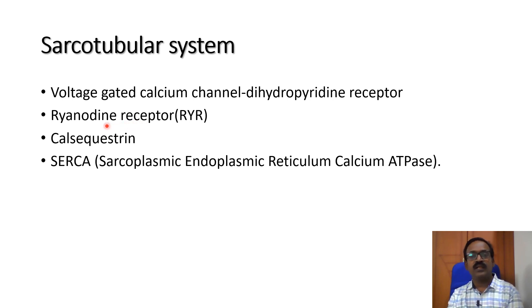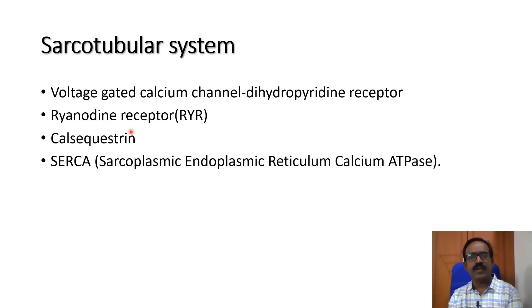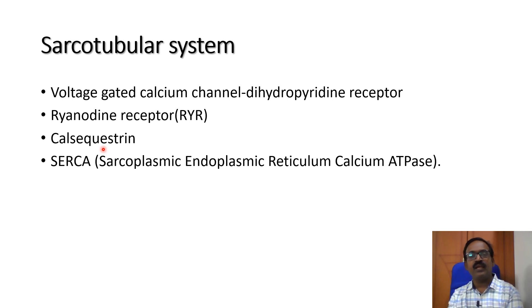In the terminal cisterns, calcium is bound to a calcium-binding protein called calsequestrin. This stores a high concentration of calcium inside the sarcotubular system.